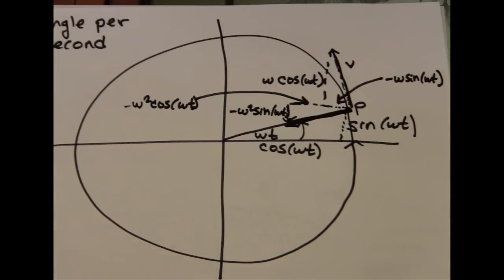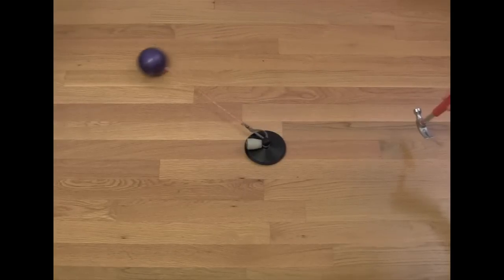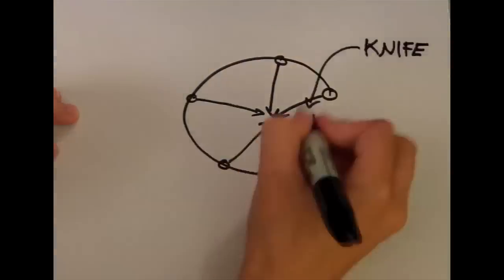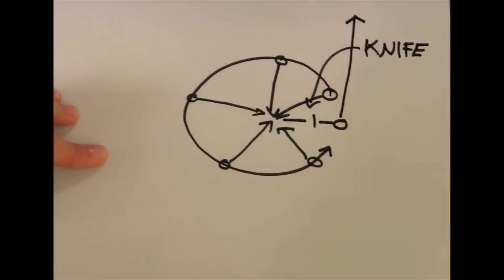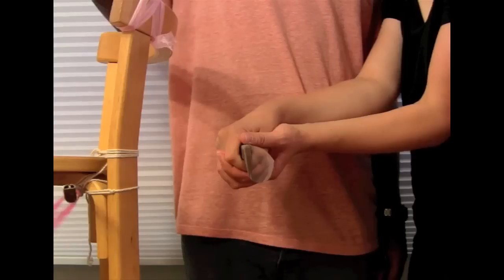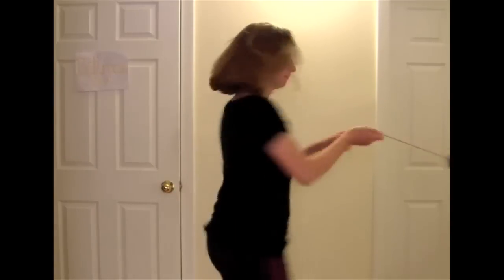There are two key points. The only force on an object in circular motion is towards the center of the circle. And if you cut that force, the object continues moving in a line tangent to the circle. I hope you have fun experimenting with circular motion at home — you don't need knives.